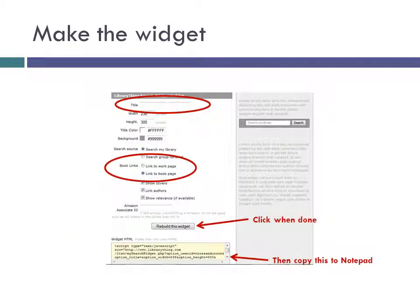Here's the page where you make the widget. The only two things you may want to change are the title — you could either leave it blank or add a more meaningful title — and the Book Links. If you change it to Link to Book Page, it will go to a page with information about the specific copy in your library. Link to Work Page, the default, goes to a page with information about the book in general. Leave everything else alone unless you want to play with customizing the style.